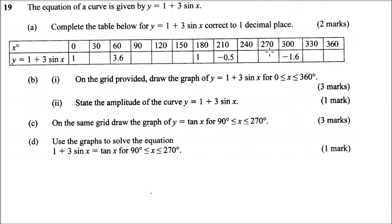Using your calculator, get these values to one decimal place. When x is 30, y is 2.5. When x is 90, y is 4. At 120, y is 3.6. At 150, y is 2.5. At 240, y is minus 1.6. At 270, y is minus 2. At 330, y is minus 0.5. Finally, at 360, y is 1.